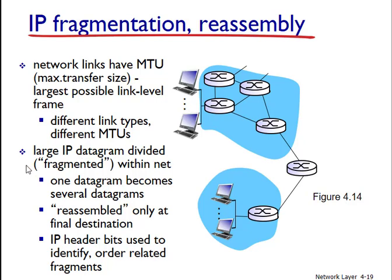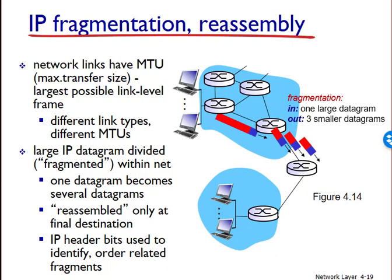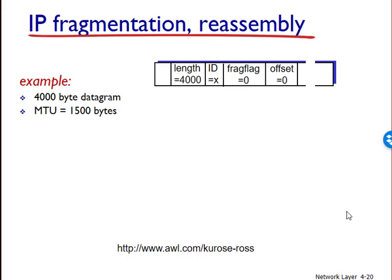Figure 4.14 illustrates an example. One large datagram was fragmented and three smaller datagrams were forwarded to the next router, which did not reassemble them in order to save time. The three datagrams were then passed up to the network layer at the destination, reassembled, and passed on to the transport layer. A datagram of 4,000 bytes — 20 bytes of IP header plus 3,980 bytes of IP payload — arrives at a router and must be forwarded to a link with an MTU of 1,500 bytes. This means the 3,980 data bytes must be allocated to three separate fragments, each of which is also an IP datagram.